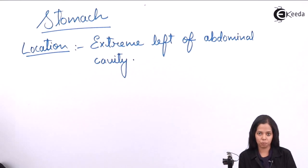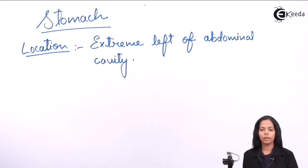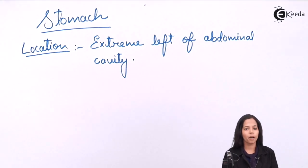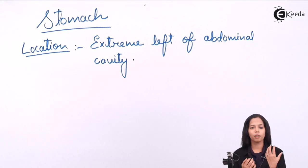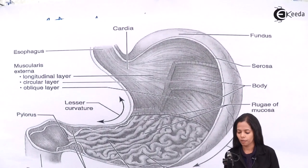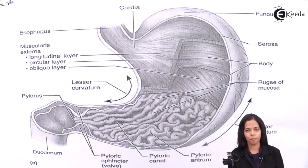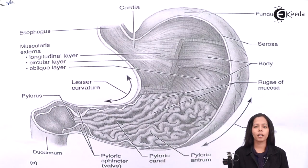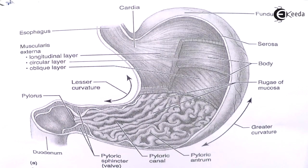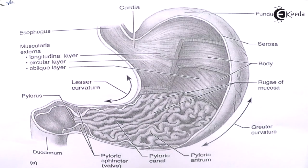Next is description. First I will describe the shape, and then I will describe the anatomical structure. Observe this diagram carefully. Speaking about the shape of the stomach, the stomach is a J-shaped organ — you can see it is appearing as the alphabet J.